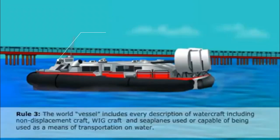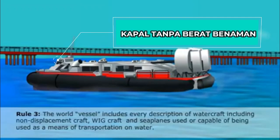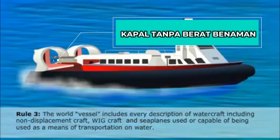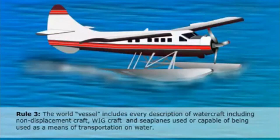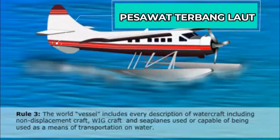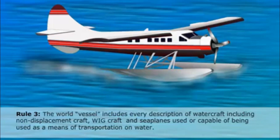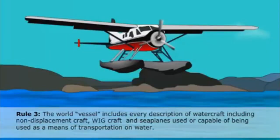The term 'vessel' includes all types of craft that float on water and are used as means of transportation, including crafts which do not displace water, such as hovercrafts. A seaplane, when on the water, displaces water, and so long as it is on the surface of the water it is considered a vessel. A seaplane is not considered a vessel when flying above the water's surface.